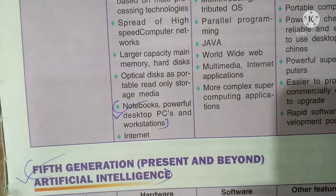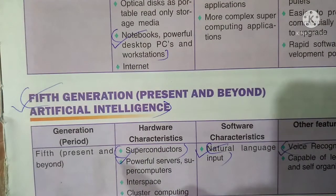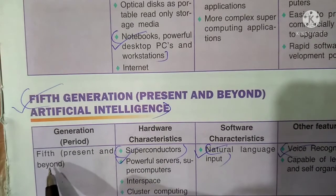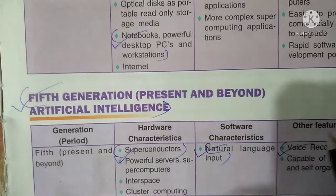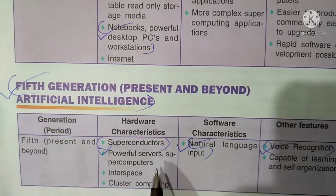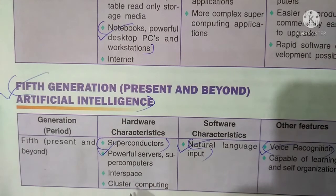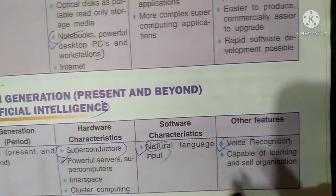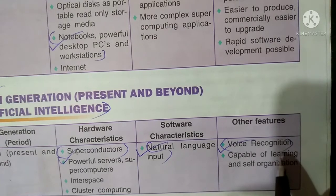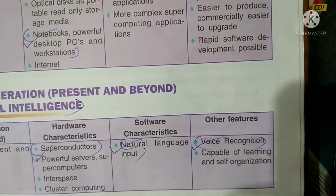Fifth Generation is the important one — this is what you are currently using. Fifth Generation computers cover the present and beyond. Hardware characteristics include semiconductors, powerful servers, supercomputers, and inter-space cluster computing. Features include natural language input, voice recognition, and computers capable of learning and self-organization.